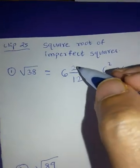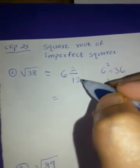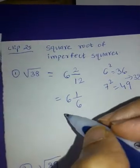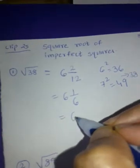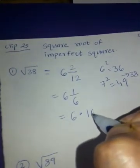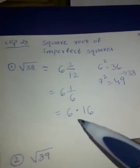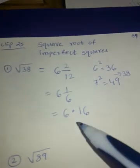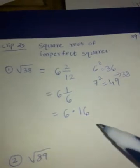6, 2 by 12. Now 2 by 12 is 1 by 6. 2 1s and 2 6s. So this is 6 integer 1 by 6. And 1 by 6 is 0.16. So this is 6.1666 whatever, recurring it is. 6.16. So your answer square root of 38 is 6.16.